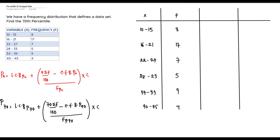We work on the class boundary by subtracting 0.5 from the lower class limit and adding 0.5 to the upper class limits. We covered this when finding the percentile of the same question, and I'll be linking that video in the top right corner so you can check it out.